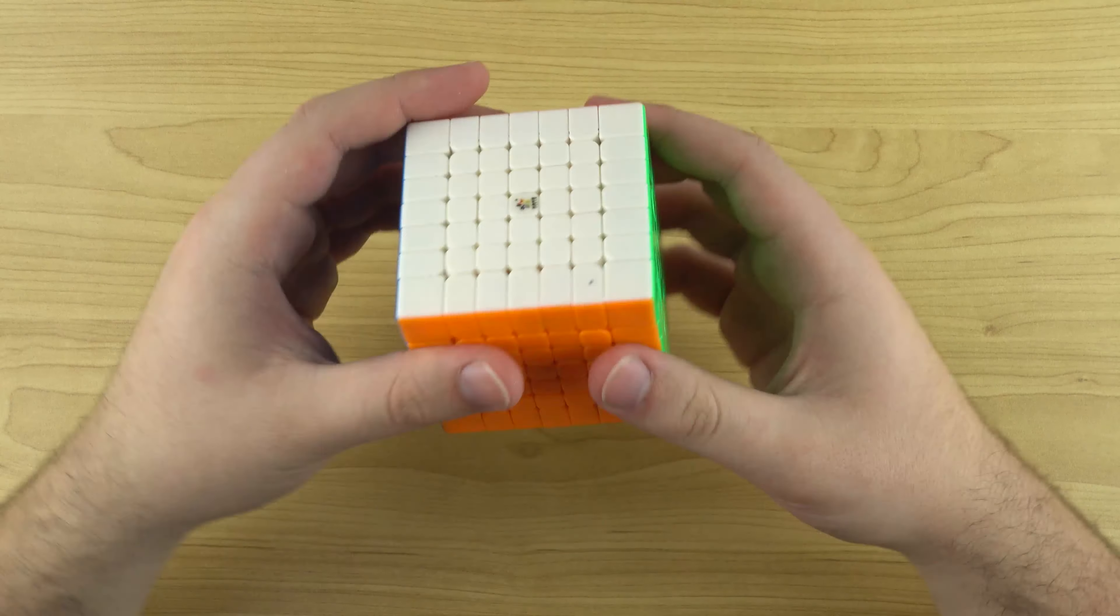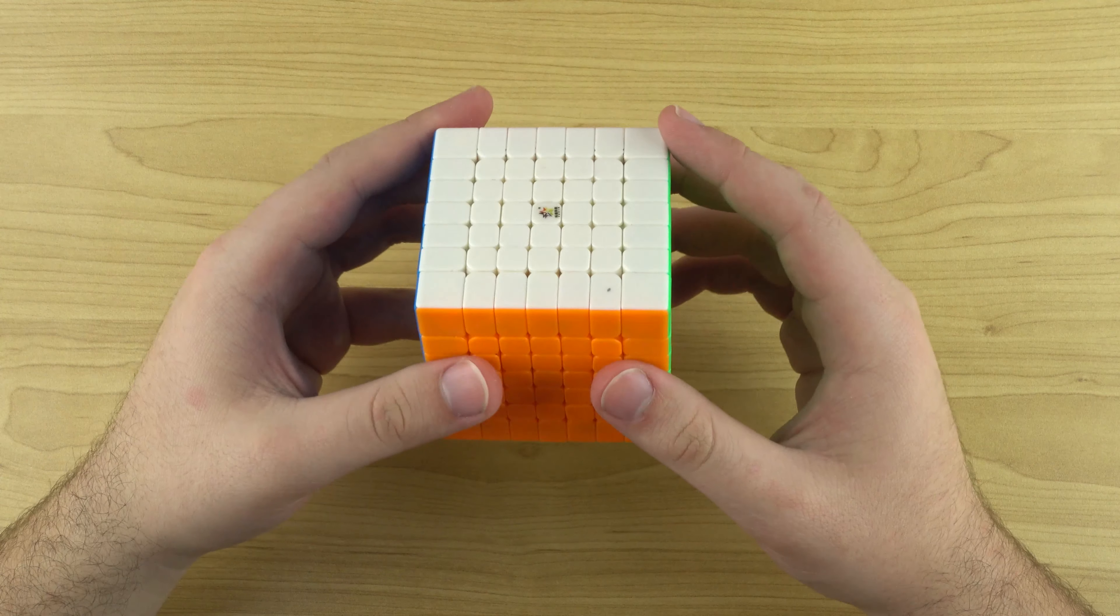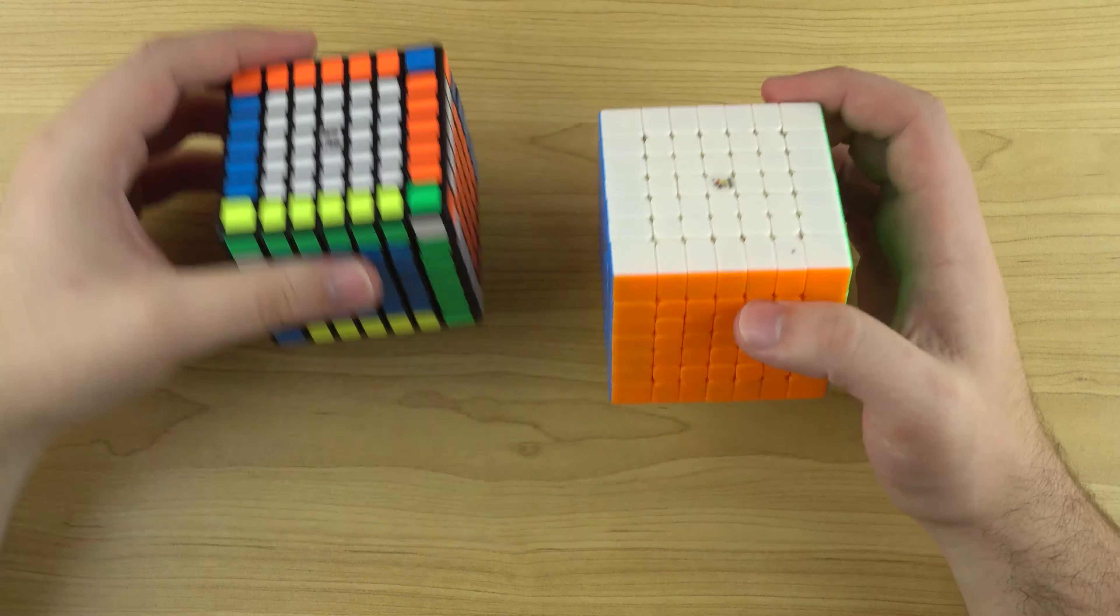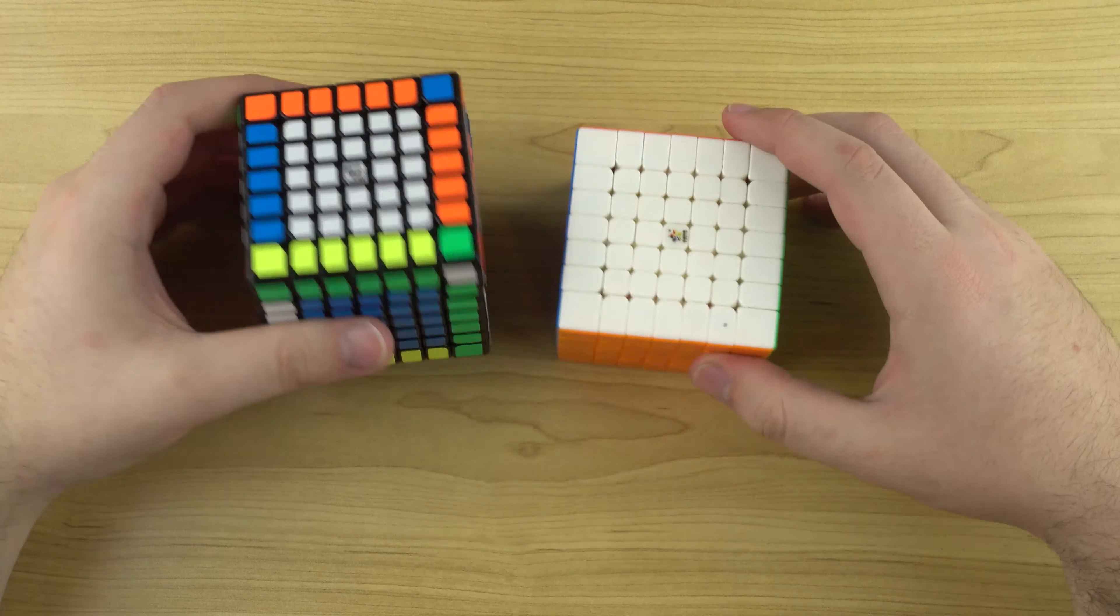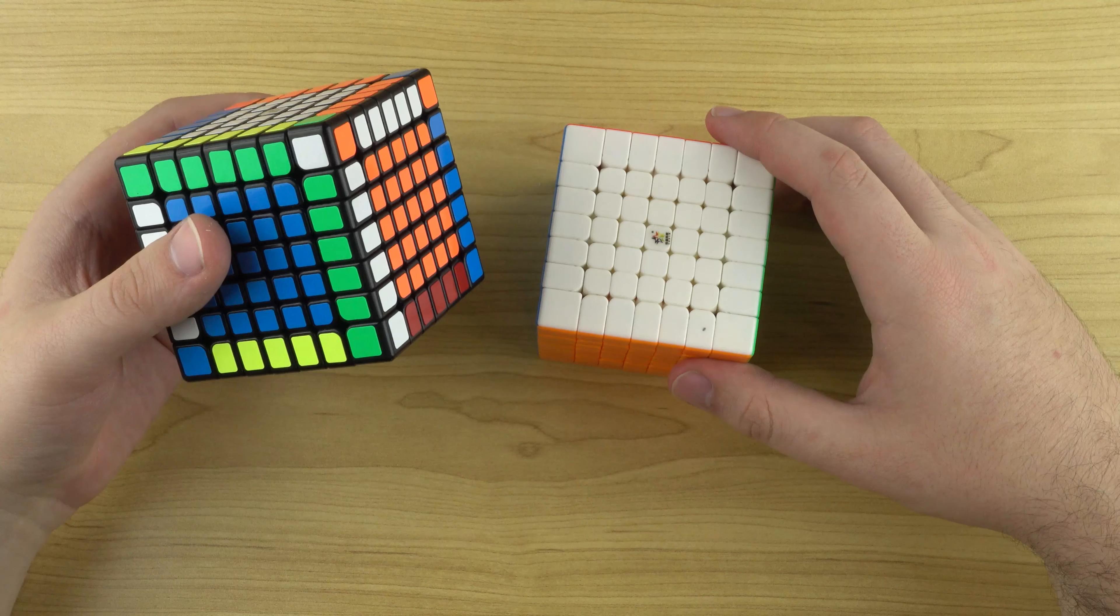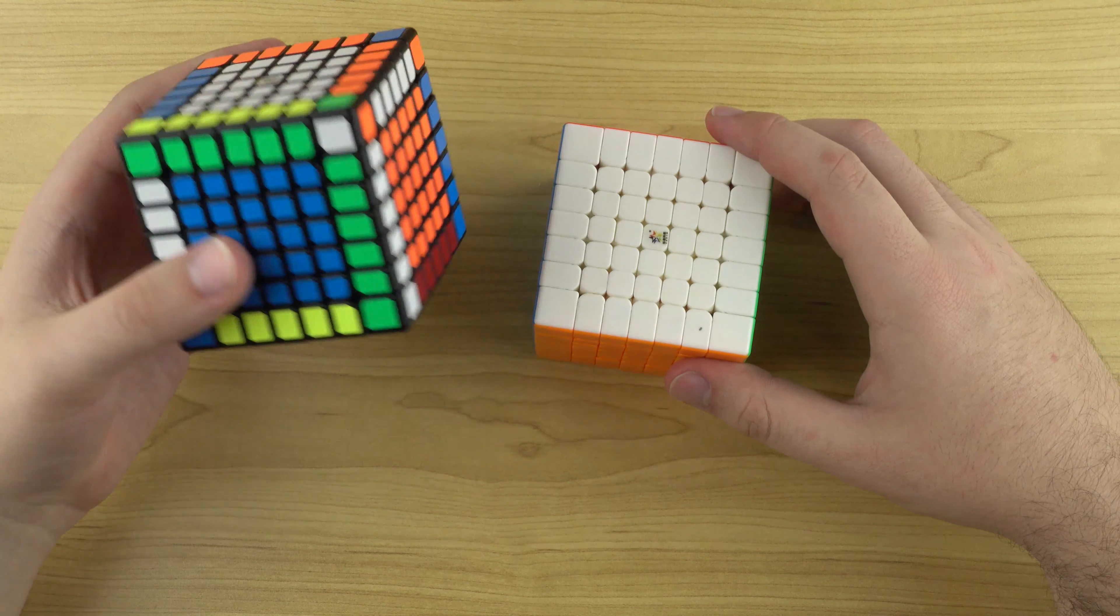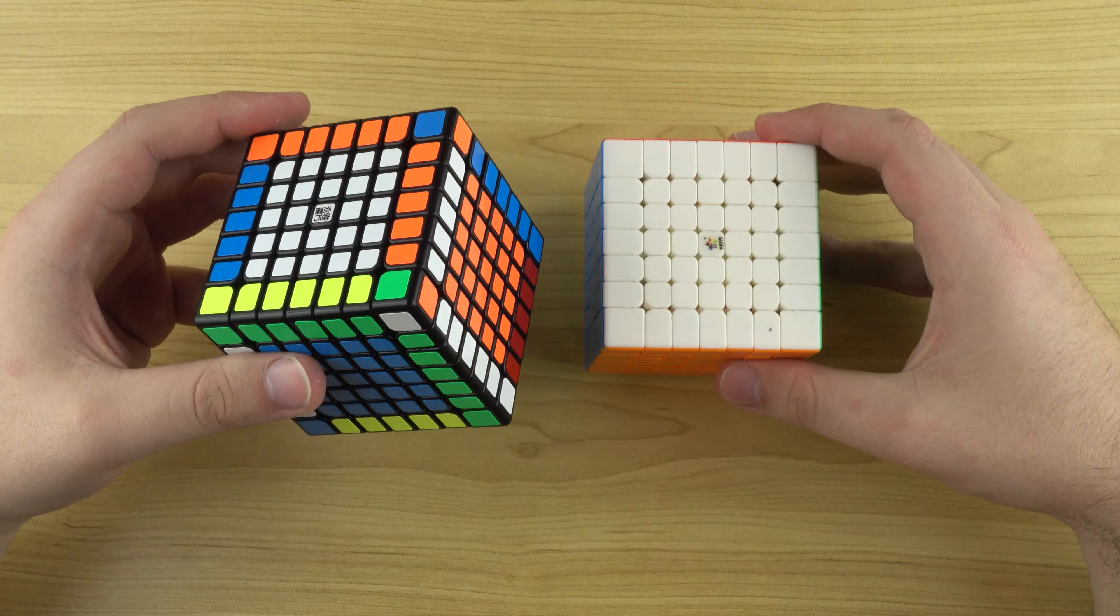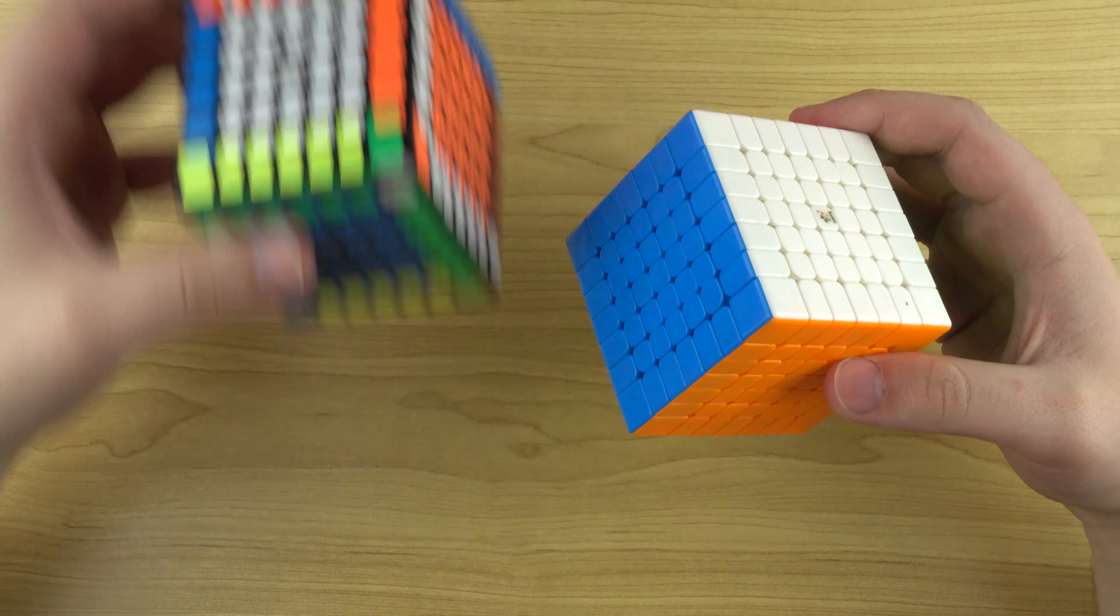So let's take a look at the cube. So one difference about this is it currently only comes in stickerless. So the Yufu does have a black and stickerless option. So that is a benefit of that puzzle, if you like a stickered puzzle. But again, there is a price difference too. $27.50 Australian, just under $40 Australian.